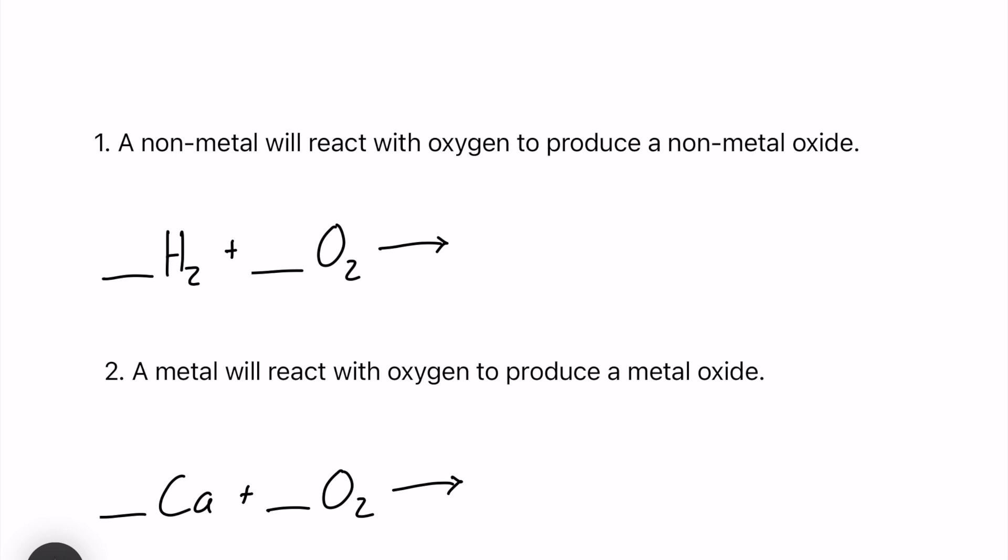The first one says a non-metal will react with oxygen to produce a non-metal oxide. So we have hydrogen gas and oxygen gas reacting, and that is actually going to make our friend H2O or water. I'm going to put down a 2 in front of H2O, a 1 in front of O2, and since I have 4 hydrogen on my product side, I want 4 on my reactant side.